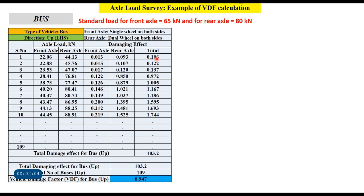Let us say the total number of buses surveyed is 109. We get values of damage effect for all 109 buses. The sum of all damage effect columns gives us a grand total of 103.2. Therefore, the vehicle damage factor for bus in this direction is 103.2 divided by 109, which equals 0.947.